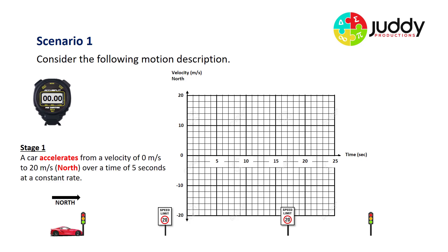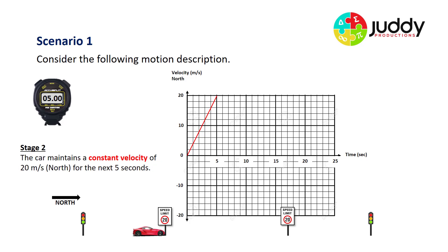Stage one: the car accelerates from a velocity of zero to 20 meters per second north over a time of five seconds at a constant rate. There goes our vehicle, going from zero and accelerating up to 20 meters per second in a northerly direction, represented on our graph with the red line. Stage two: the car maintains a constant velocity of 20 meters per second north for the next five seconds.